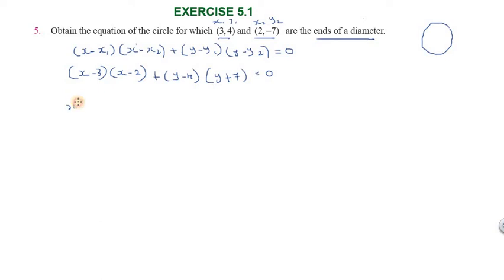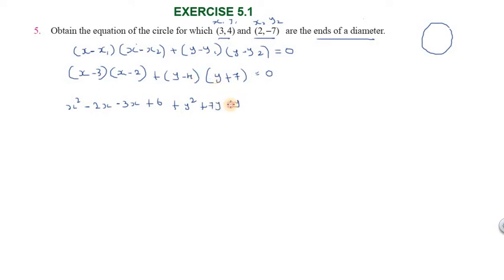Expanding: x squared minus 2x minus 3x plus 6, plus y squared minus 4y minus y plus 4, giving x squared minus 5x plus 6 plus y squared minus 5y plus 4, minus 28 equal to 0.